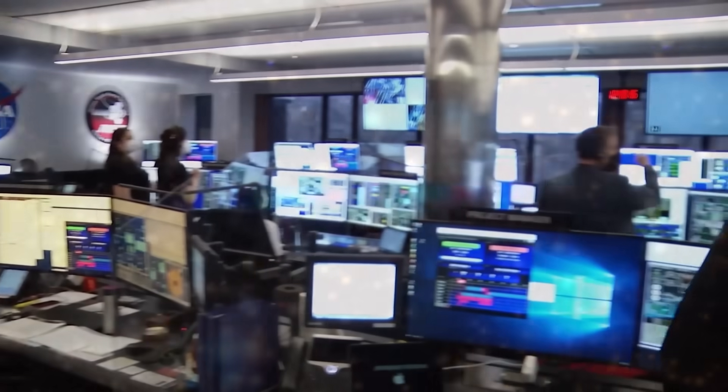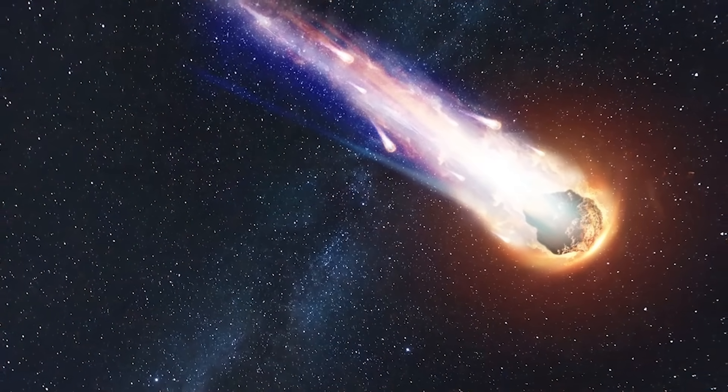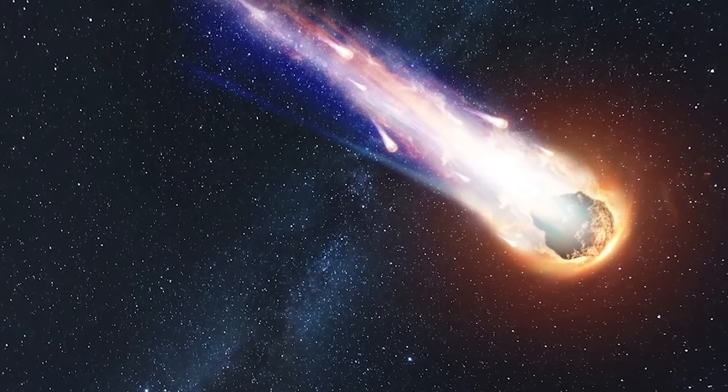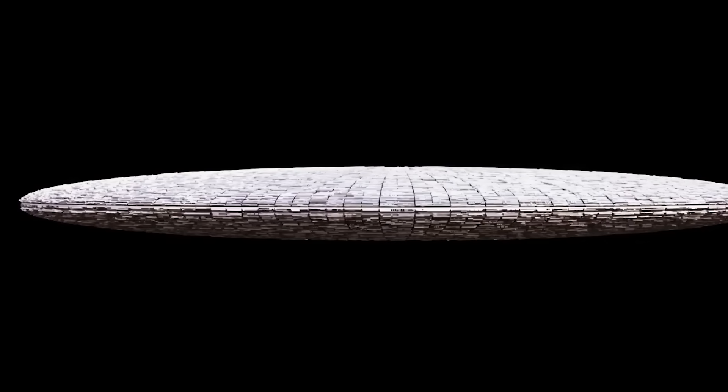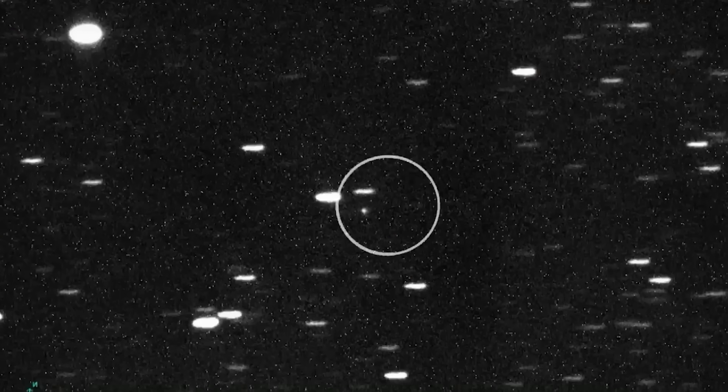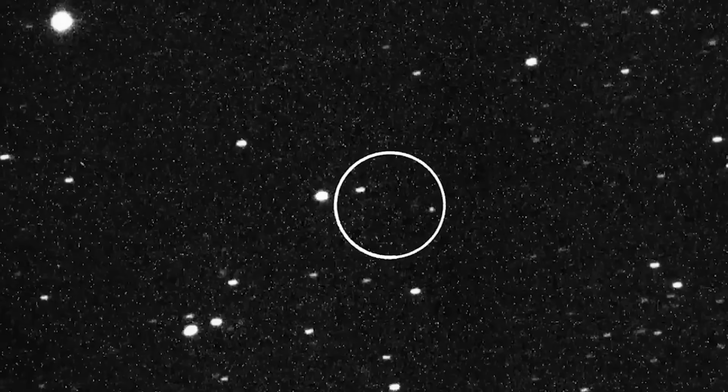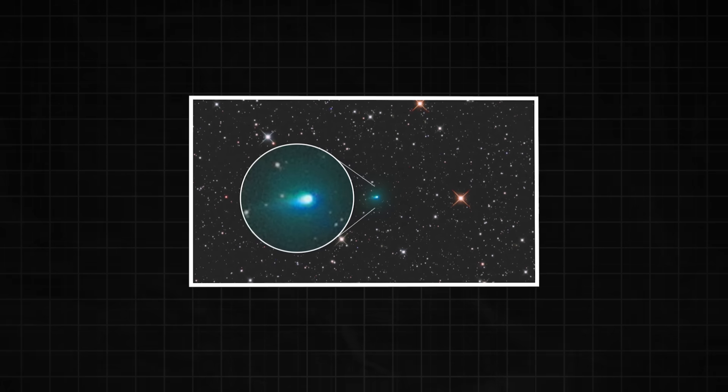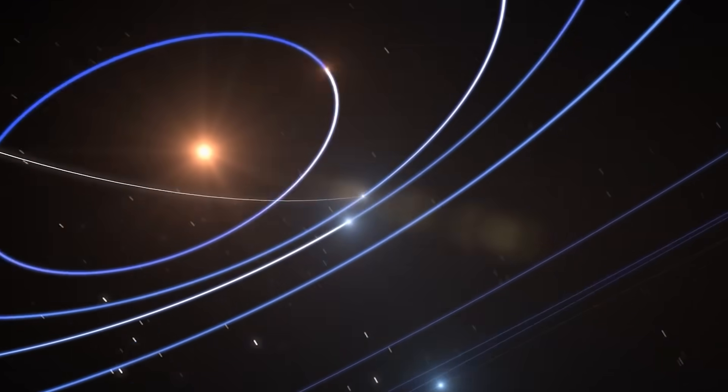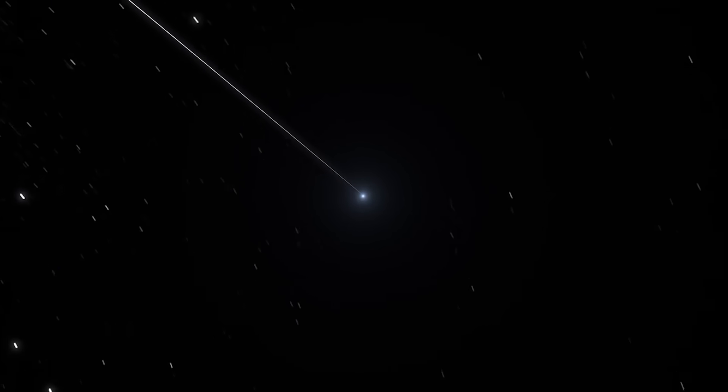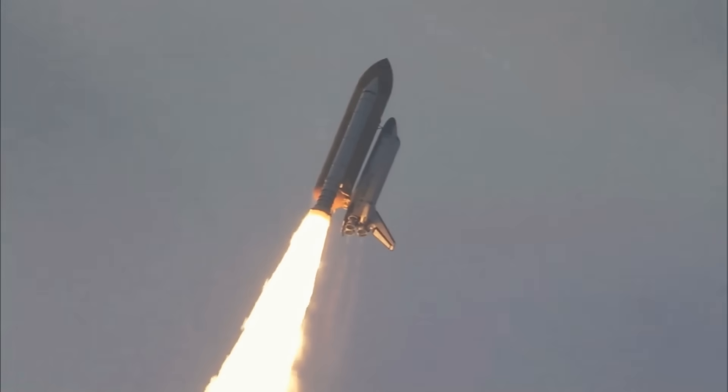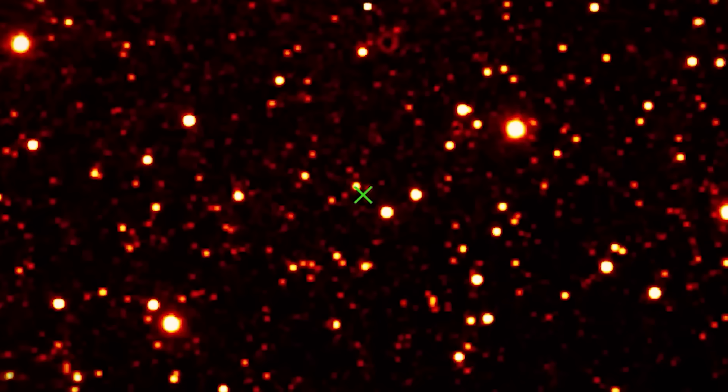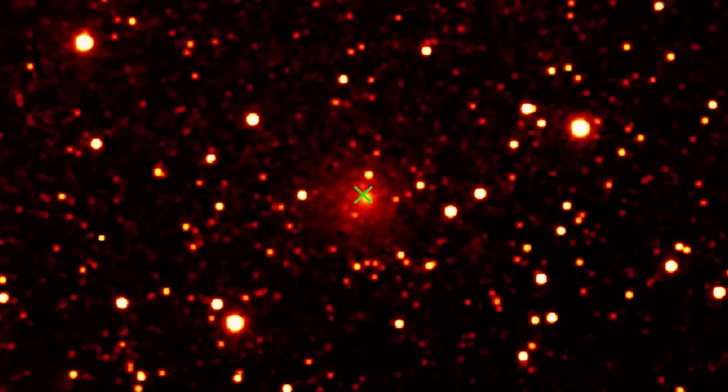As we stand on the precipice of a new era, staring into the abyss of the unknown, it's easy to get lost in the grand, terrifying questions. Is it an alien probe? A weapon? A living creature? But what if we're all asking the wrong questions? What if the real mystery of three-eye atlas is not what it is, but why it's here now? Think about it. This object traveled for thousands, maybe millions of years, from another star system, only to arrive in our cosmic neighborhood at this precise moment in our history, a time when we are on the verge of becoming a spacefaring civilization ourselves. Is that a coincidence? Or is it a calculated move in a cosmic chess game we didn't even know we were playing?